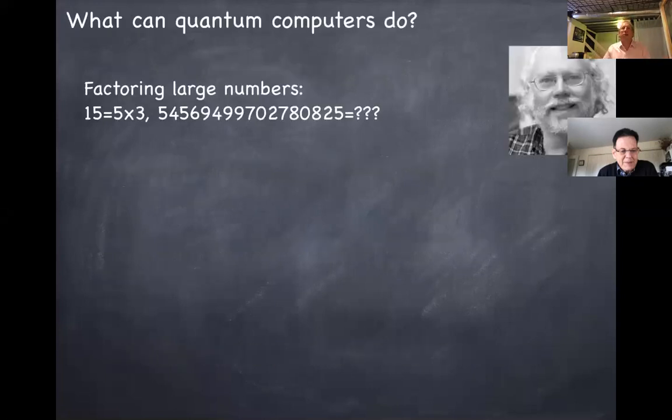So what can quantum computers do? The real first injection of serious interest in this field occurred when Peter Shor in 1994 showed that quantum computers could solve the factoring problem. They could, given a very large number, deliver its prime factors in an amount of quantum resources scaling only polynomially with the number of digits of the integer.